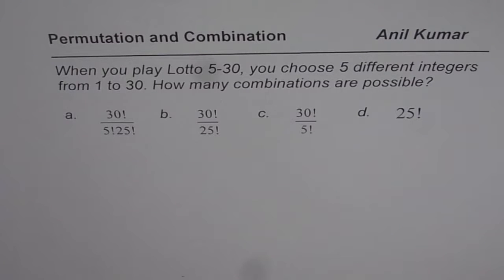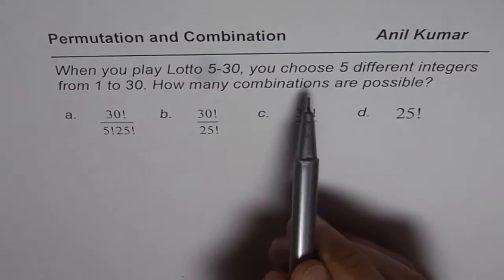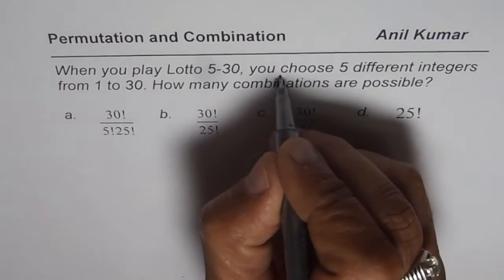Now it is important to note that in Lotto 5-30, when you choose five different integers, the key word here is choosing.